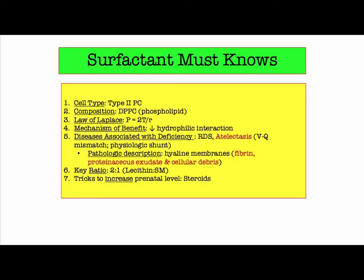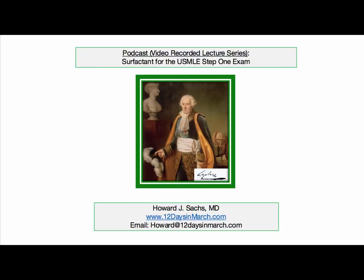To summarize the take-homes: the type 2 pneumocyte secretes surfactant, and the composition is essentially phosphatidylcholine. Following the law of Laplace, collapsing pressure P is reduced if you decrease surface tension T — this particularly benefits alveoli with their tiny radius. Key diseases where this is relevant include respiratory distress syndrome of the newborn and atelectasis. Be familiar with the key measure of lung maturity — the lecithin-to-sphingomyelin ratio; at 2 to 1, lecithin exceeds the fixed amount of sphingomyelin. Finally, the trick to increase prenatal levels of surfactant is glucocorticoid use. That concludes this discussion of surfactant for the USMLE Step 1.